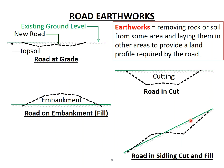Sometimes the road needs to be built on a slope, such as going around a hill. When cutting into the side of a hill, it's called a sideling cut. In cut and fill, part of the hill is cut and the material is placed as fill on the other side. You can also have sideling cuts where you're entirely cutting into the side of the hill, or where the whole fill embankment is on the side of the hill.